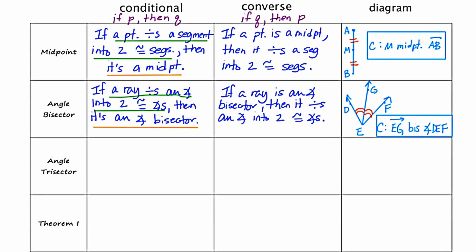Our next definition is for angle trisector. It's very similar to angle bisector, but if we focus on the prefix: 'bi' means two, and the large angle was split into two equal angles. The prefix 'tri' means three, so that's like taking an angle and splitting it into three equal angles. The definition is: if two rays divide an angle into three congruent angles, then they are angle trisectors.